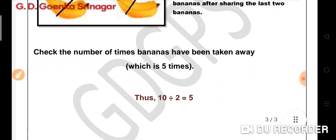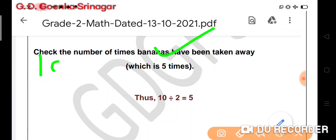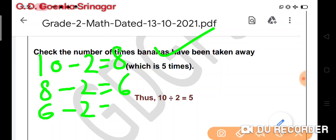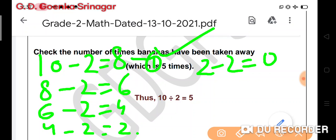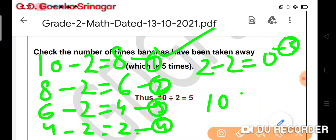Check the number of times bananas have been taken away, which is 5 times. 10 minus 2 equals 8, 8 minus 2 equals 6, 6 minus 2 equals 4, 4 minus 2 equals 2, and 2 minus 2 equals 0. We did our repeated subtraction in 1, 2, 3, 4, and 5 steps. So 10 divided by 2 is equal to 5.